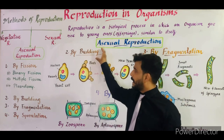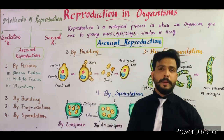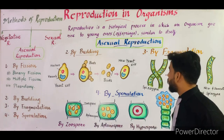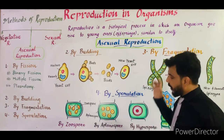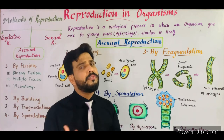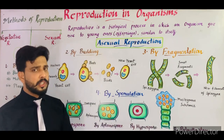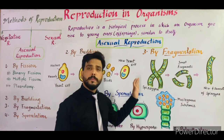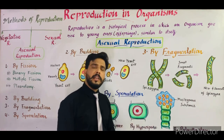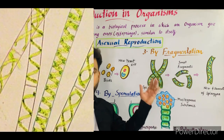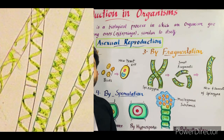This method of reproduction is known as budding, and yeast is the best example of budding. Now the second method is fragmentation. A fragment means a small piece of a filament — that is known as fragmentation. The example is the alga Spirogyra, which is a freshwater alga found in ponds.